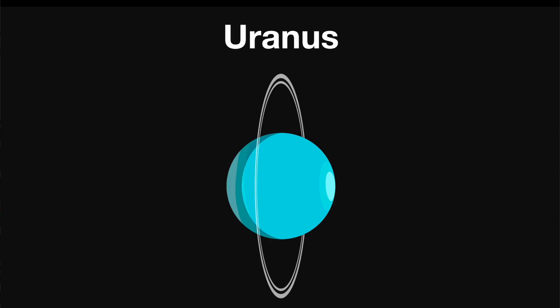Uranus is the seventh planet from the Sun. It's the fourth largest planet. This planet is also known as the blue planet. This is due to the methane gas in the atmosphere.